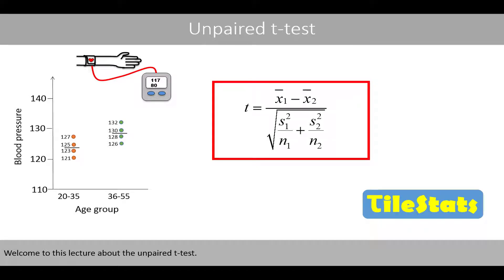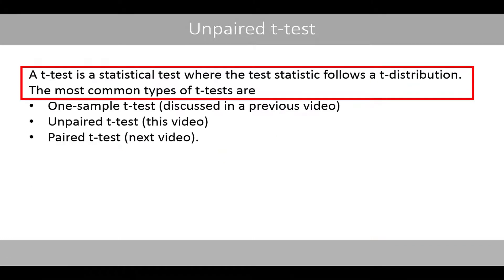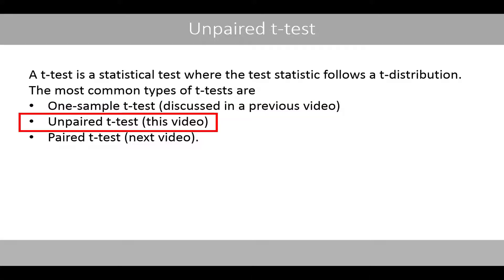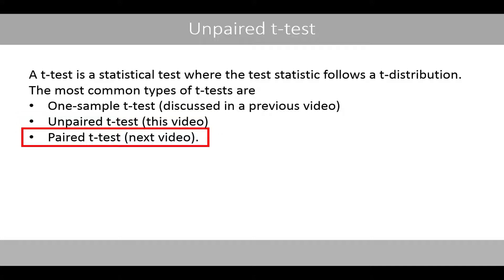Welcome to this lecture about the unpaired t-test. A t-test is a statistical test where the test statistic follows a t-distribution. The most common types of t-tests are the one-sample t-test, as discussed in the previous video, the unpaired t-test that we will discuss in this video, and the paired t-test that we will have a look at in the next video.